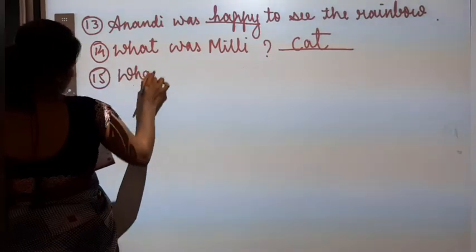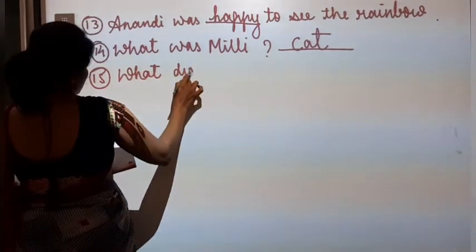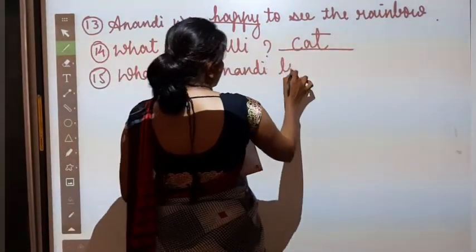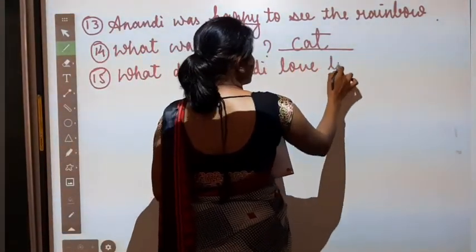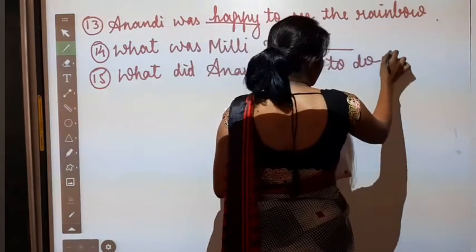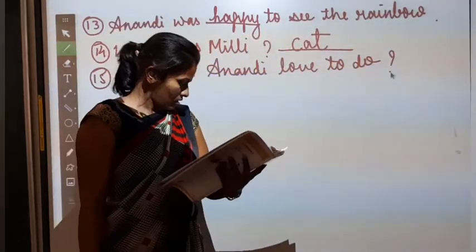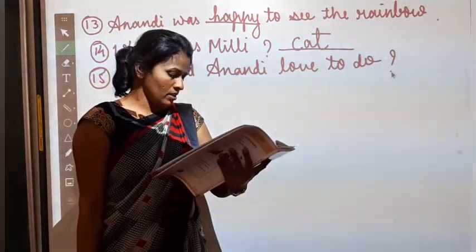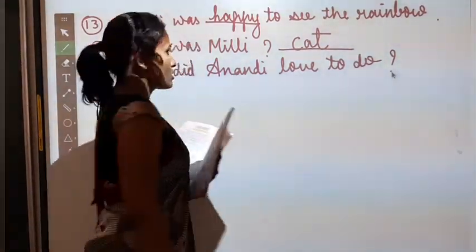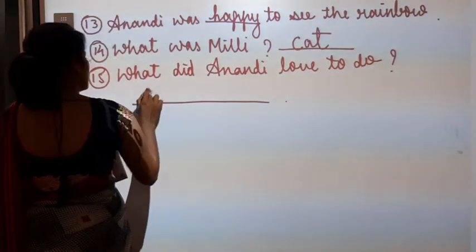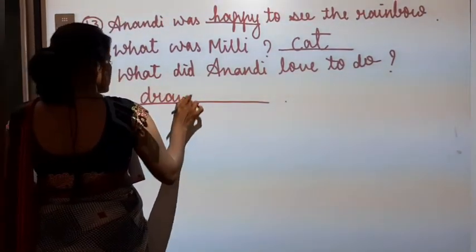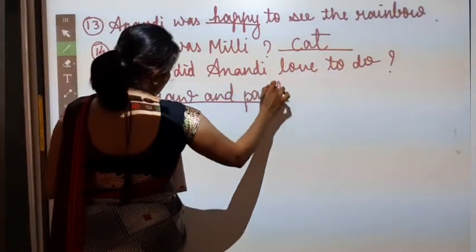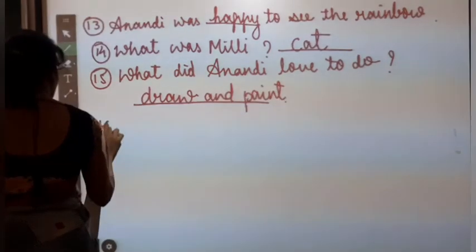What did Anandi love to do? Anandi ko kya karna pasand tha? Read and write, jump and play, sing and dance, draw and paint. So Anandi loved to draw and paint. Okay. Number sixteen.